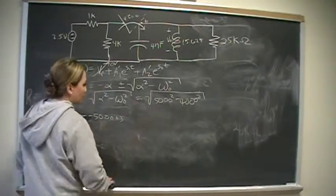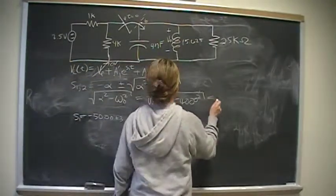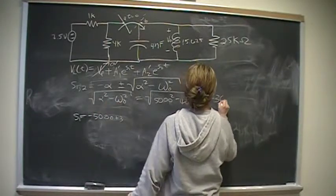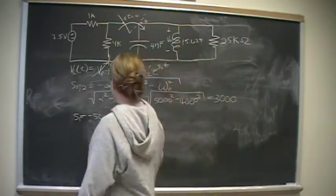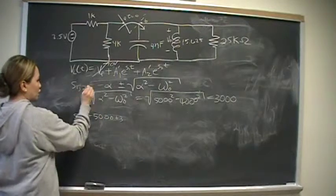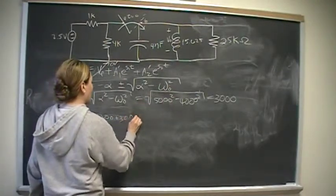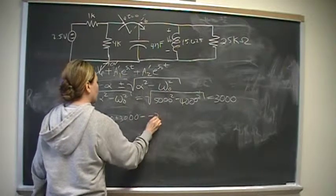So I'm going to move this 3,000 over here. So this root is 3,000. And so S1 is going to be negative alpha plus 3,000, which is negative 2,000.